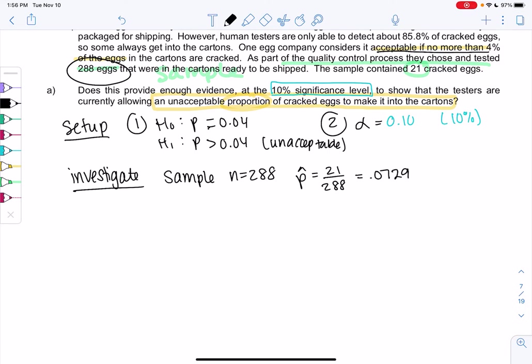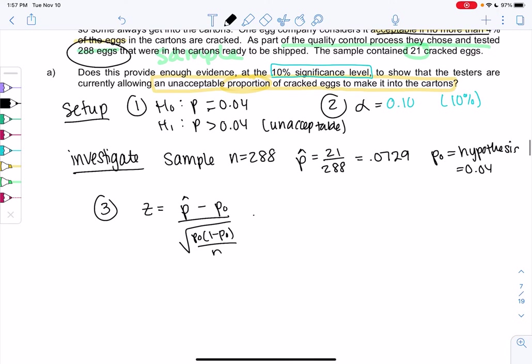We're going to find a Z-score. Since we don't really have a mean or standard deviation, we have a special Z-score for this. It's going to be P hat minus P0, so that'll be 0.04, and then divide it by this new formula that represents standard deviation. It'll be square root of P0 times 1 minus P0 over N. So we will do the sample value 0.0729 minus 0.04, all over this really ugly square root, 0.04 times 1 minus 0.04, all over 288.